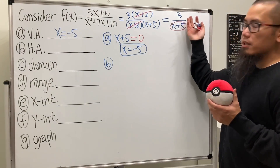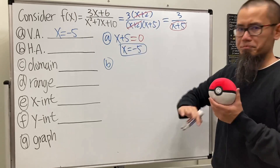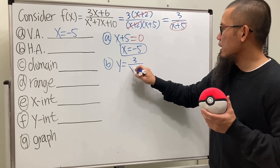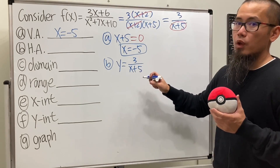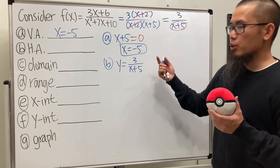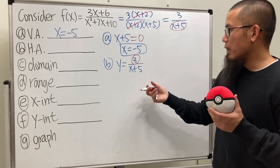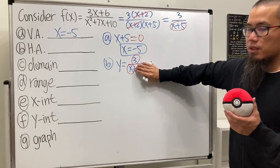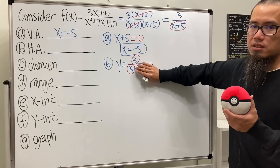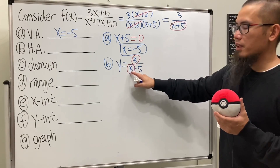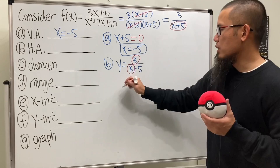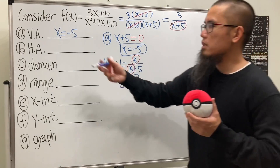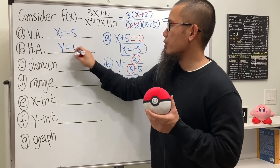For the horizontal asymptote, we can use the reduced version: y equals 3 over (x + 5). On the top we just have the number 3 and on the bottom we have x to the first power. As x goes to infinity, 3 over infinity is zero, so y equals zero is the horizontal asymptote.